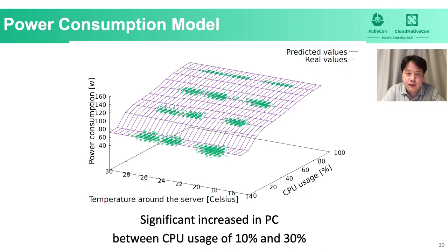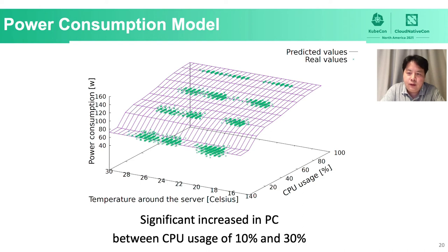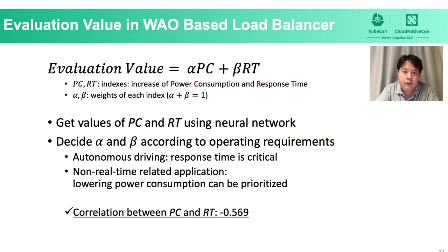This 3D figure shows the result of the server power consumption model in this experiment. The horizontal axes indicate temperature around the server and CPU usage, and the vertical axis indicates power consumption. Blue lines are predicted values from the power consumption model, and the scattered points are real values from the test data. The most remarkable finding is that the server's power consumption increased significantly when the CPU usage was between 10% and 30%. In addition to the power prediction model, we also create a response time model to evaluate the response time of applications.